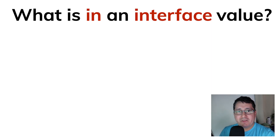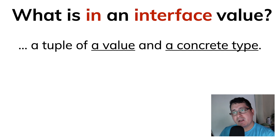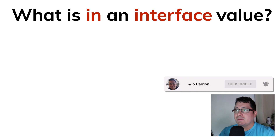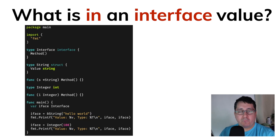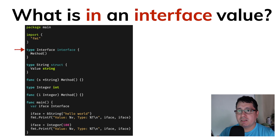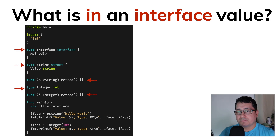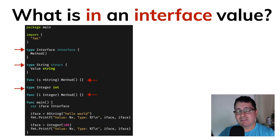So what is in an interface value? There are two values in an interface value: one of them will be the actual value, and the other one will be the concrete type. On the left side of the screen we have three types: an interface type, a struct called string, and a type called integer that happens to use the int type. Those two types — string and integer — are implementing the method and therefore implementing the interface type.